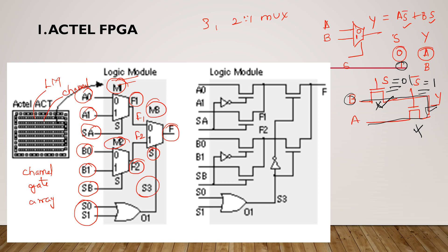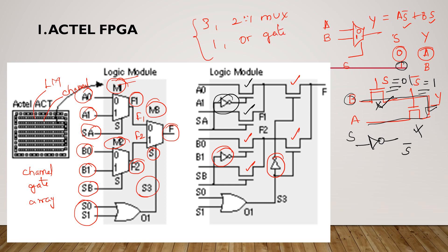Each MUX requires 2 NMOS transistors. The LM model consists of three 2-to-1 MUXes. MUX1 requires 2 NMOS transistors and 1 inverter. Similarly MUX2 requires 2 NMOS transistors and 1 inverter. For MUX3, it requires 2 transistors and 1 inverter. So in total, 6 NMOS transistors with 3 inverters are required. Along with that, one 2-input OR gate is required. This is the construction of the LM model.